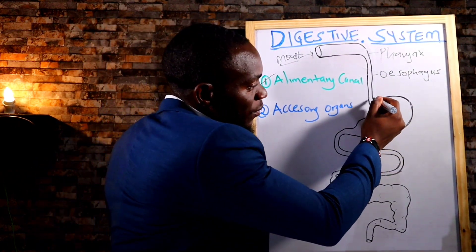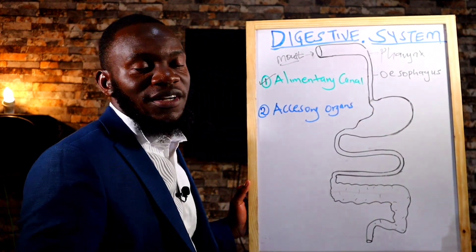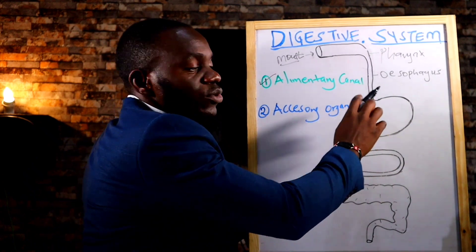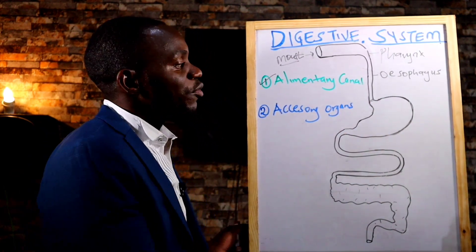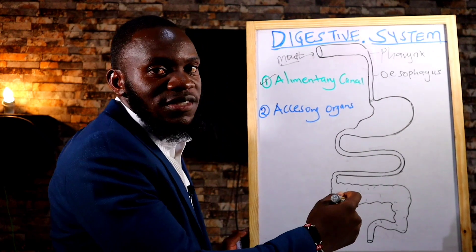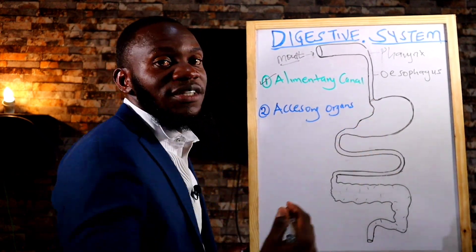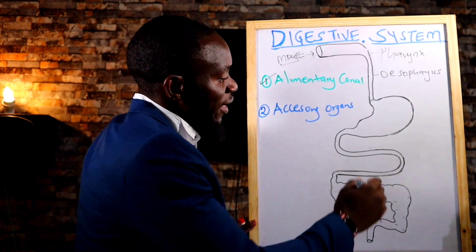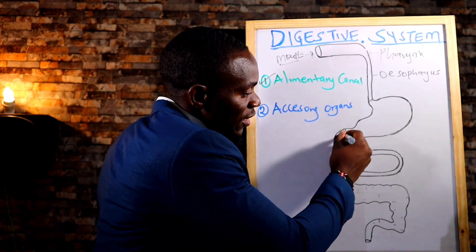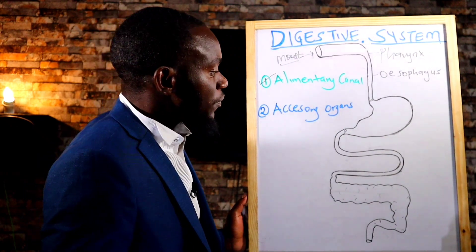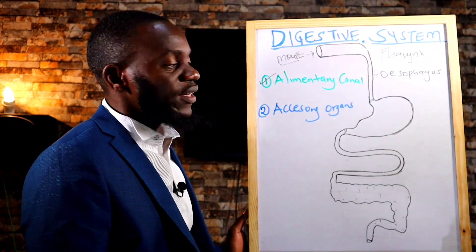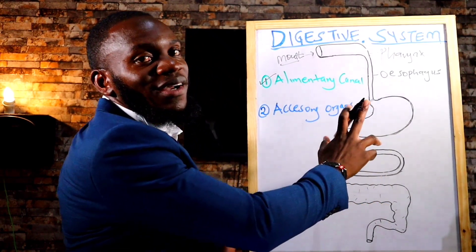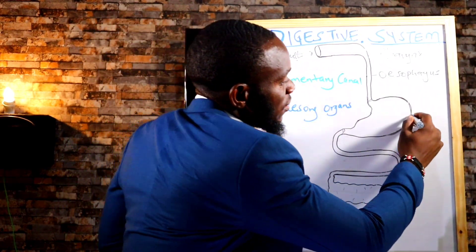Above the stomach, we have a sphincter called the cardiac sphincter. This is to prevent the backflow of food from the stomach into the esophagus, and this is the sphincter most affected when people have peptic ulcer disease. Below the stomach, there is another sphincter called the pyloric sphincter, which aids food to go into the small intestines and not come back into the stomach.